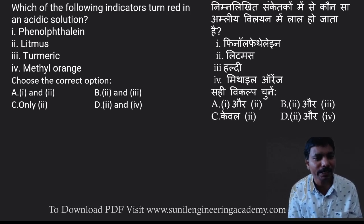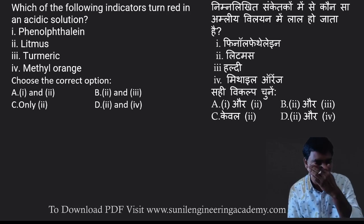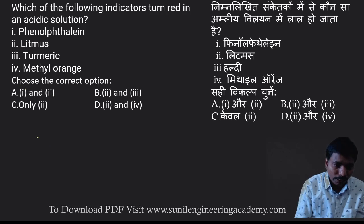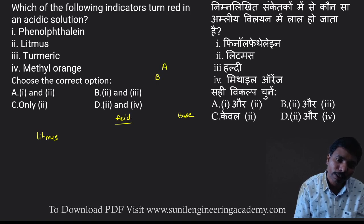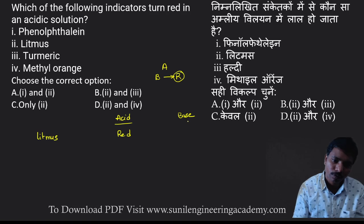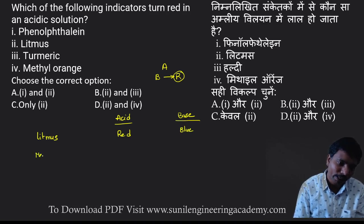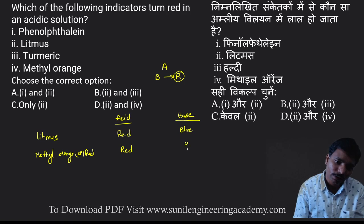Which of the following indicators turns red in acidic solution? In the theory session I gave details about these indicators. In the case of acidic solution, acid converts blue litmus to red litmus, so you get red. For methyl orange and methyl red, in case of acidic they form red color, and yellow color in the case of base.